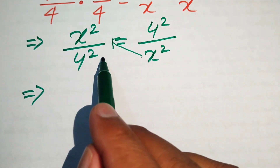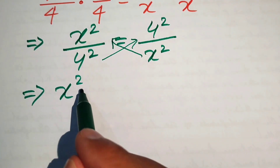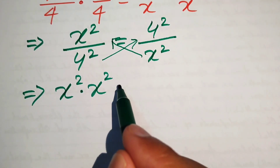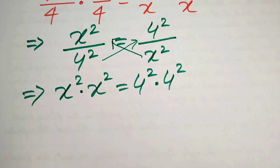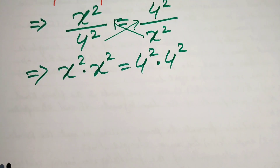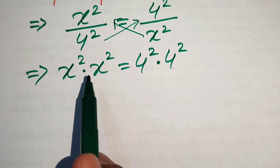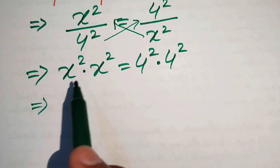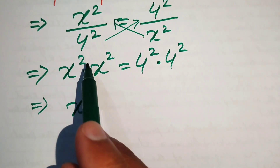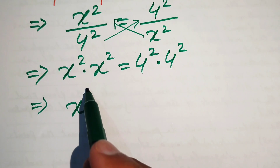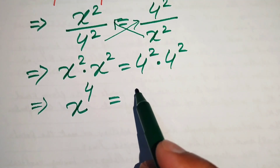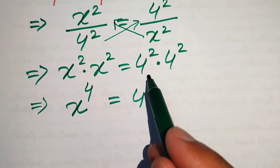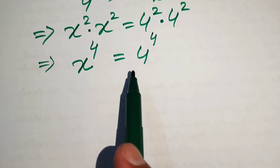In the next step we need to cross multiply the terms. We multiply x squared by x squared and 4 squared by 4 squared, giving us x squared times x squared equals 4 squared times 4 squared. Since the bases are the same, we add the exponents: 2 plus 2 gives 4 on both sides, so x to the power of 4 equals 4 to the power of 4.